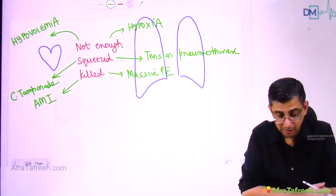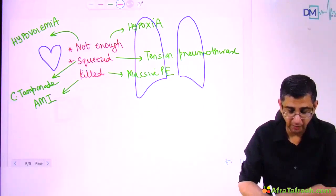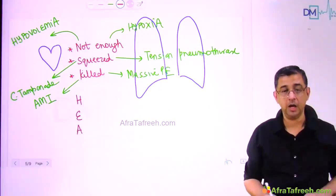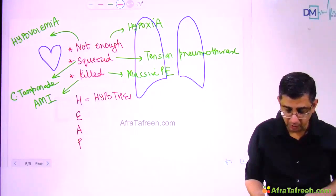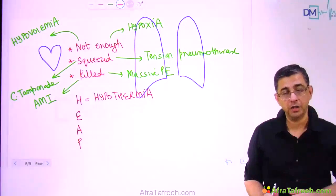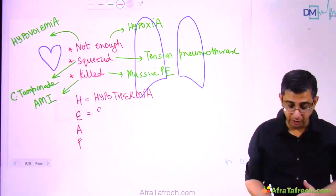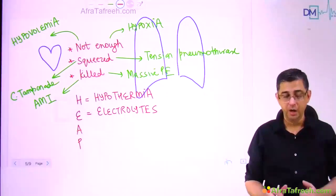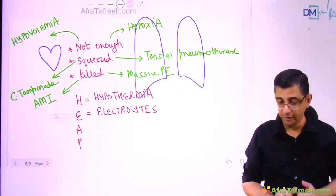Six causes can be simply remembered: the heart is not getting enough inflow, the heart is getting compressed, or the heart is getting killed. Then we remember the mnemonic HEAP for the remaining ones, which are relatively easy to pick up clinically. H — hypothermia: easy to identify, patient is icy cold or history of cold exposure. E — electrolyte imbalance: easy because ABG with electrolytes is done in all resuscitations, mainly potassium — hyperkalemia in a known CKD or dialysis patient presenting pulseless is a giveaway.